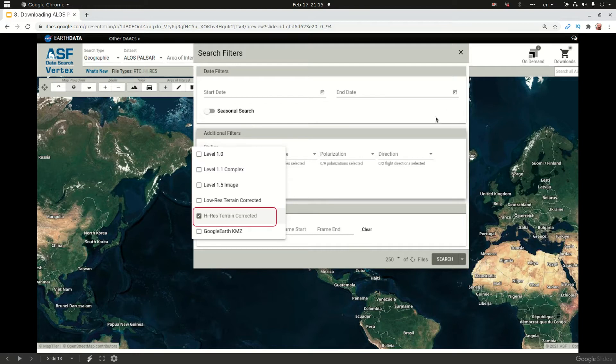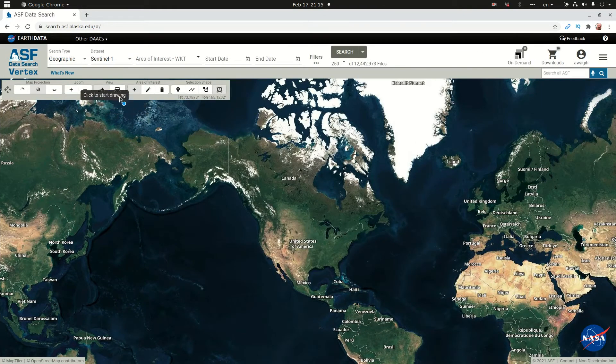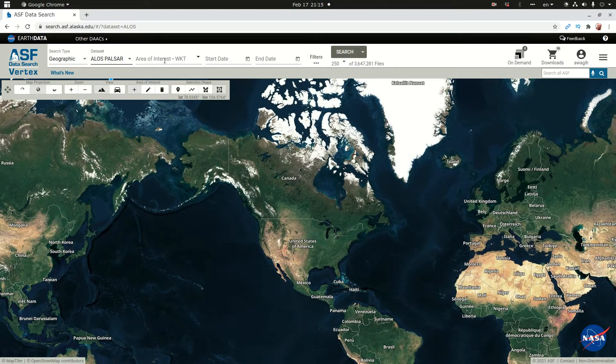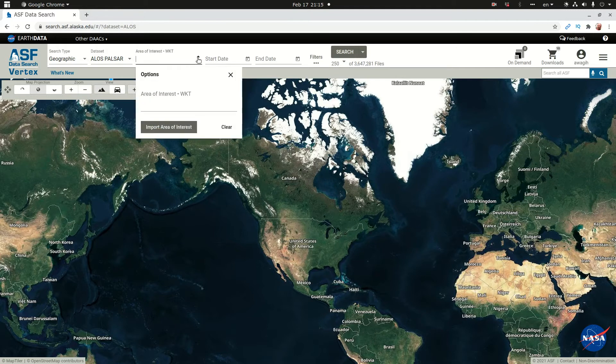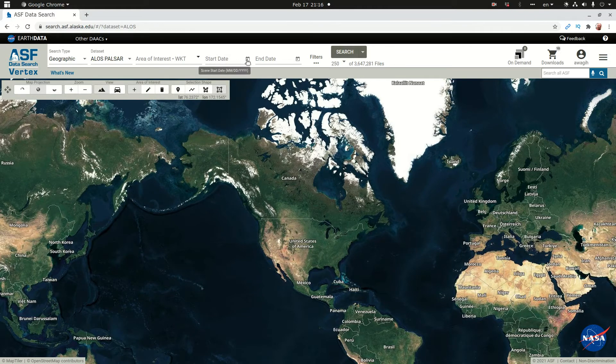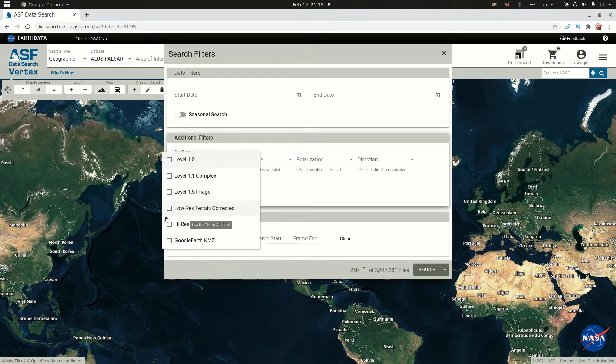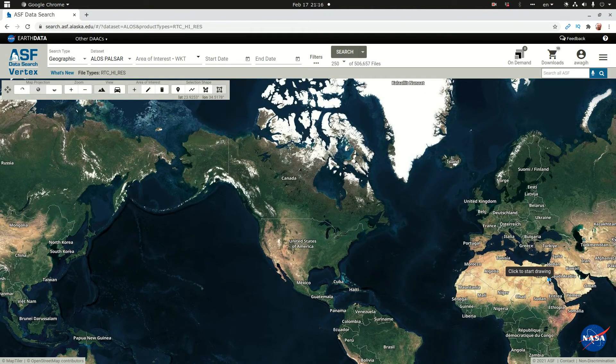Let's go to the page and download the data. We start by selecting the product, the data product that we want, which is ALOS PALSAR. We might import a KML file of our area of interest but we don't have one now. We might set the dates, the period that we're looking for, and then we go to filters.